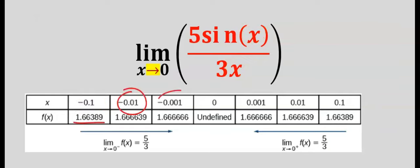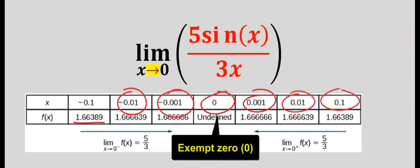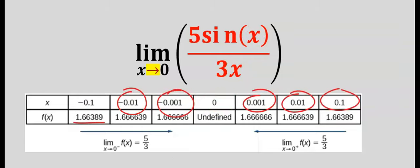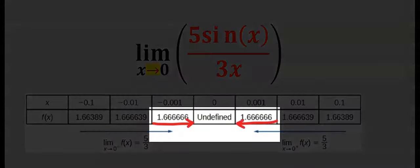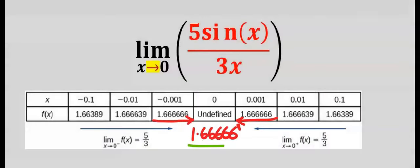Repeat same for other values except zero because zero will give us undefined. From the table you can see, as we approach this zero both from the left and from the right, we are approaching 1.6666 reoccurring.